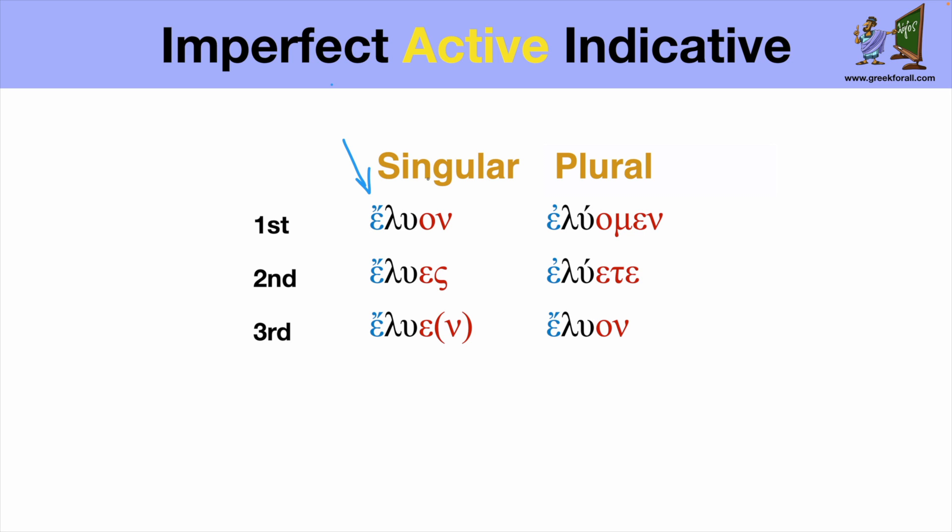So the first person singular, we will translate I was losing. Second person you were losing, third person he, she, it was losing, plural we were losing, you were losing, they were losing.